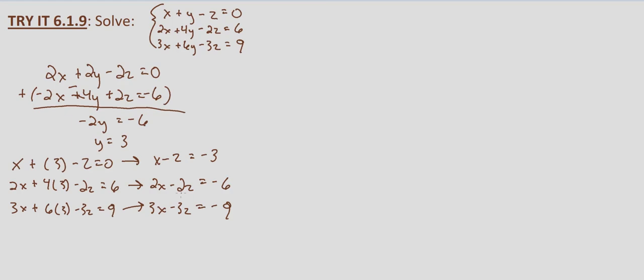So what's going to happen here, let's go ahead and show what's going to happen. But what's going to happen is the variables are going to fall out and we're going to end up with the true statement, not an untrue statement. So I'll mark this as my new equation one, this is my new equation two, this is my new equation three.